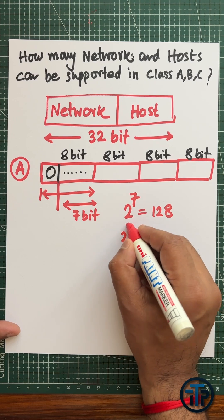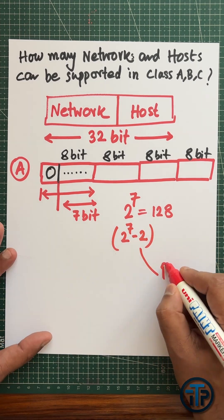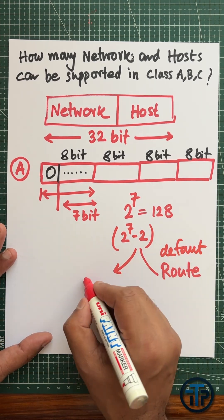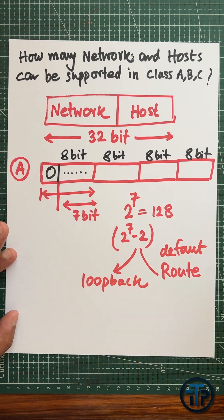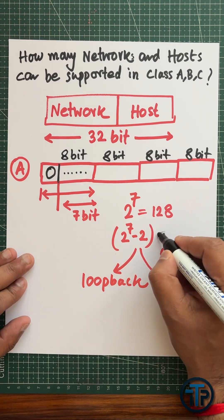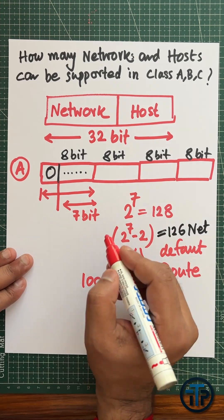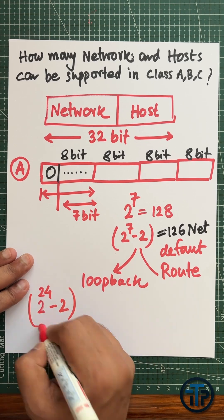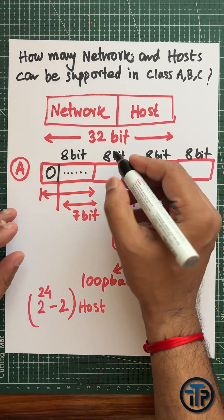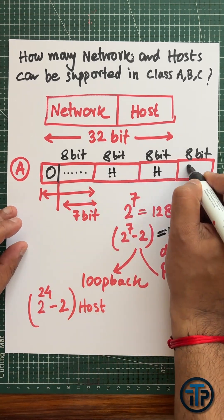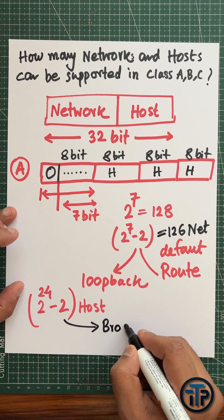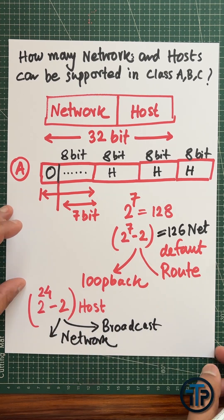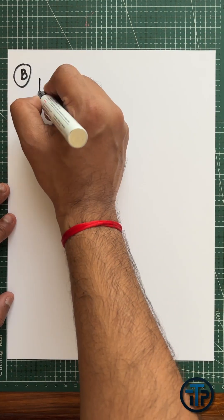The remaining 7 bits can be used to denote how many networks can be supported. However, two values are reserved — one for the default route and one for loopback — so basically 126 networks can be supported. For hosts, it is 2 to the power 24 minus 2, where one address is used for broadcast and one for the network address.